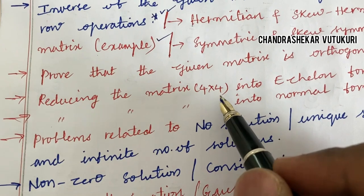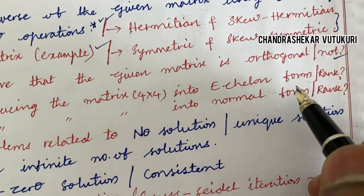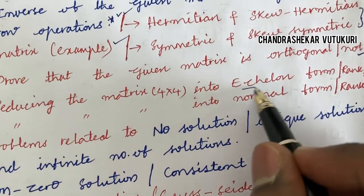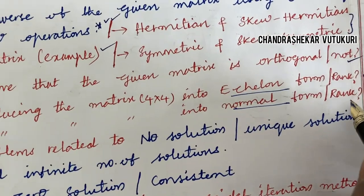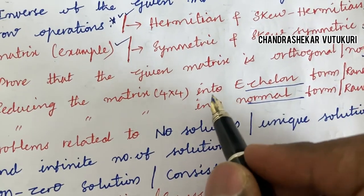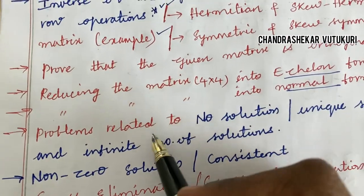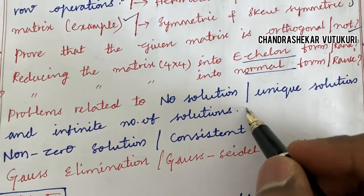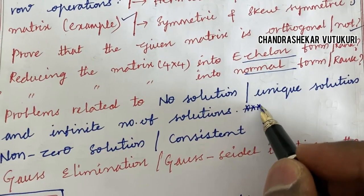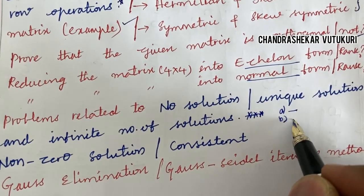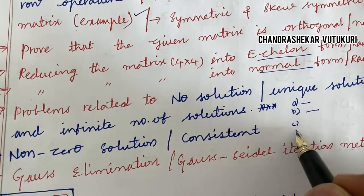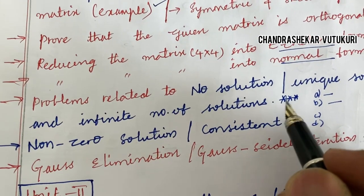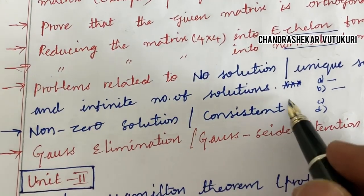Reducing the given matrix — whether 3×3 or 4×4 — into echelon form and finding the rank, or reducing the given matrix into normal form: out of these two, you are going to get one question for sure. I have mentioned only the size of the matrix here, not the matrix itself. Problems related to no solution, unique solution, and infinite number of solutions are also important. In A and B you may get the normal form or echelon form.